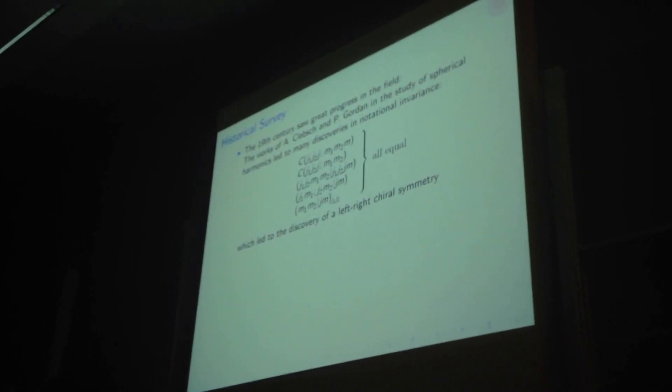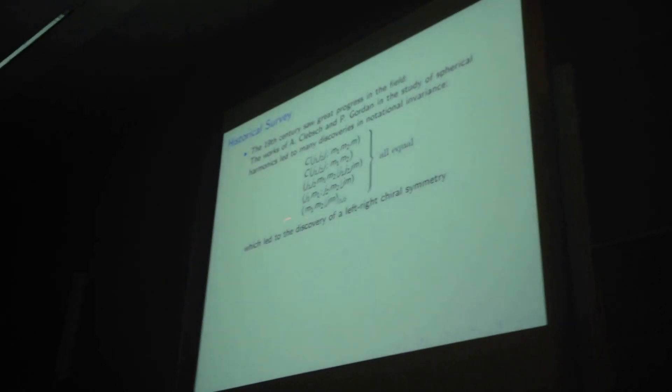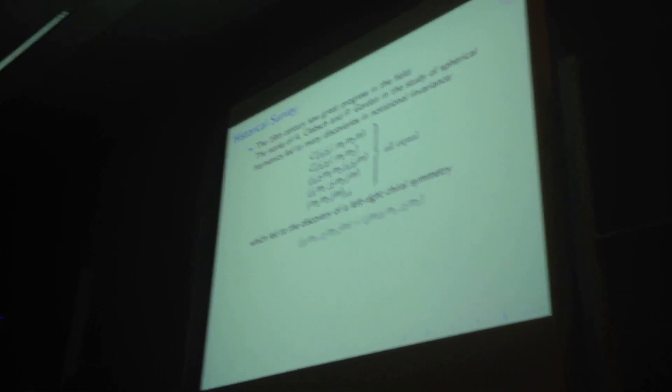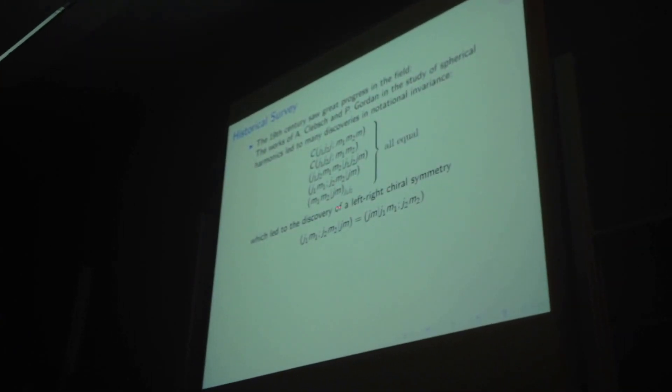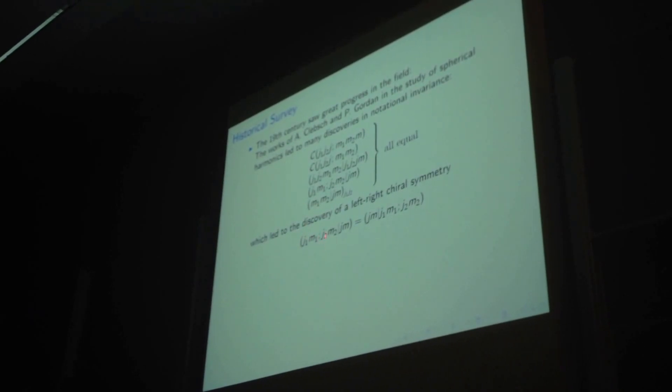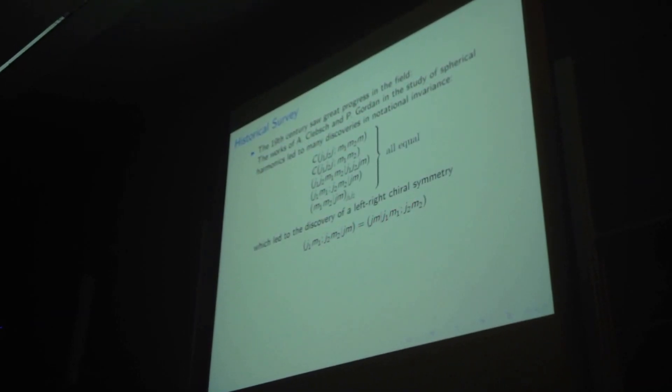So perhaps the most interesting discovery was the first discovery of left-right chiral symmetry. Namely, the J1, M1, J2, M2, J, M is the same as J, M, J1, M1.